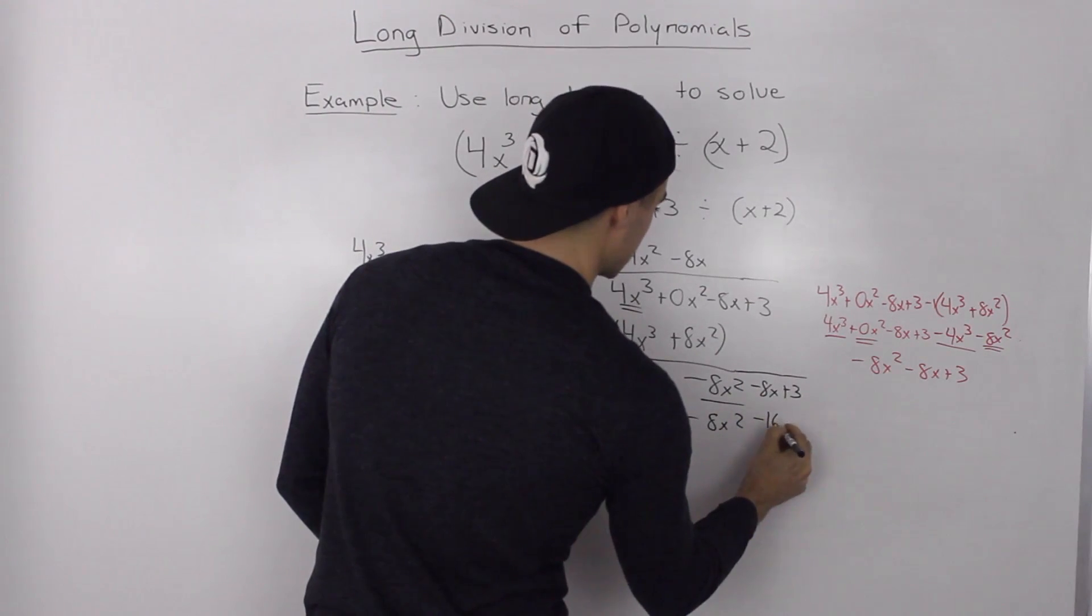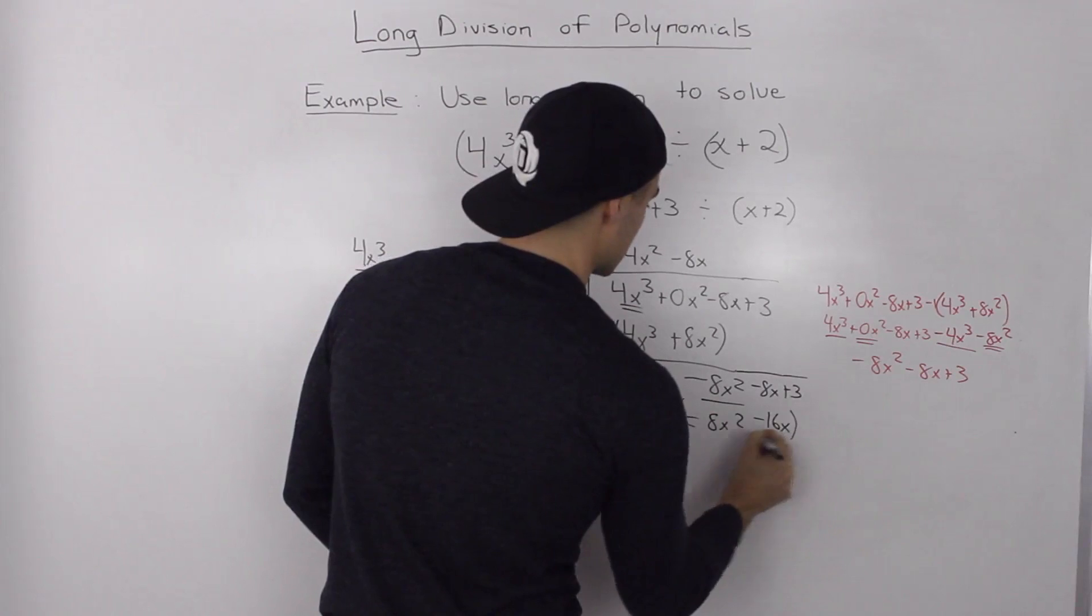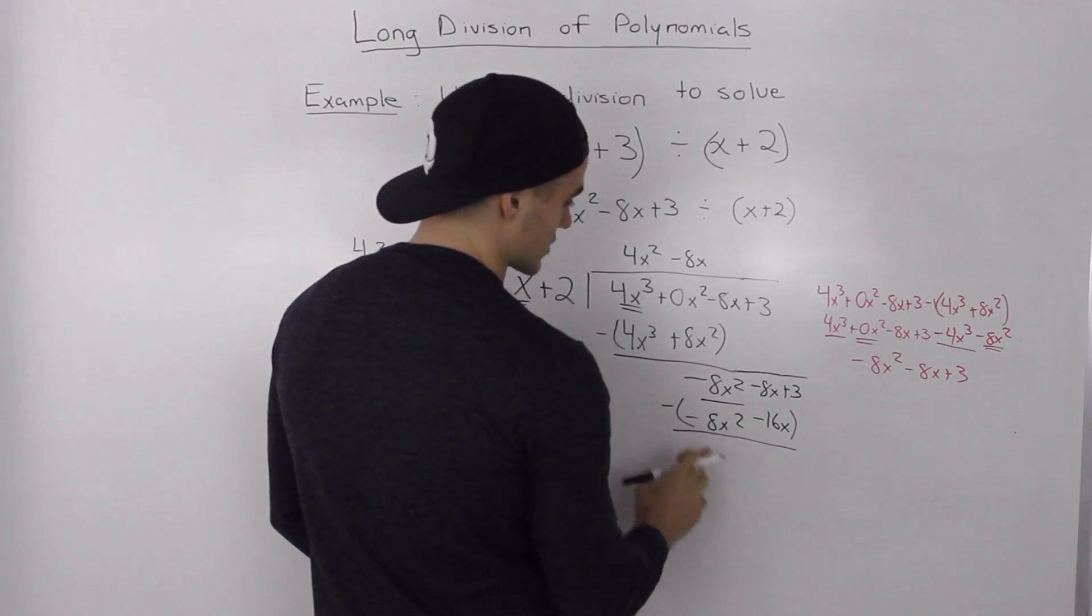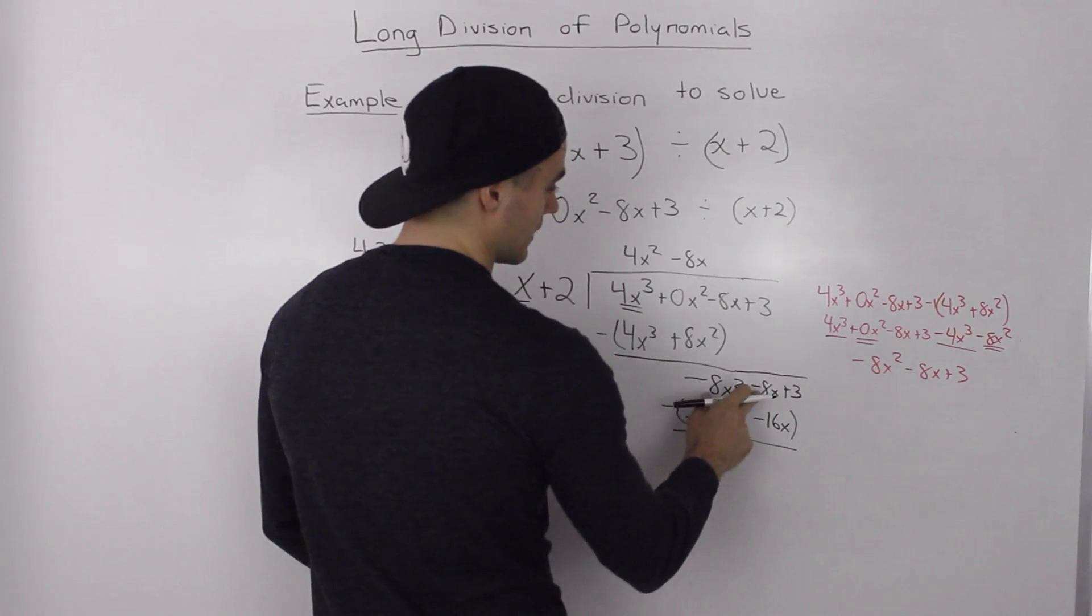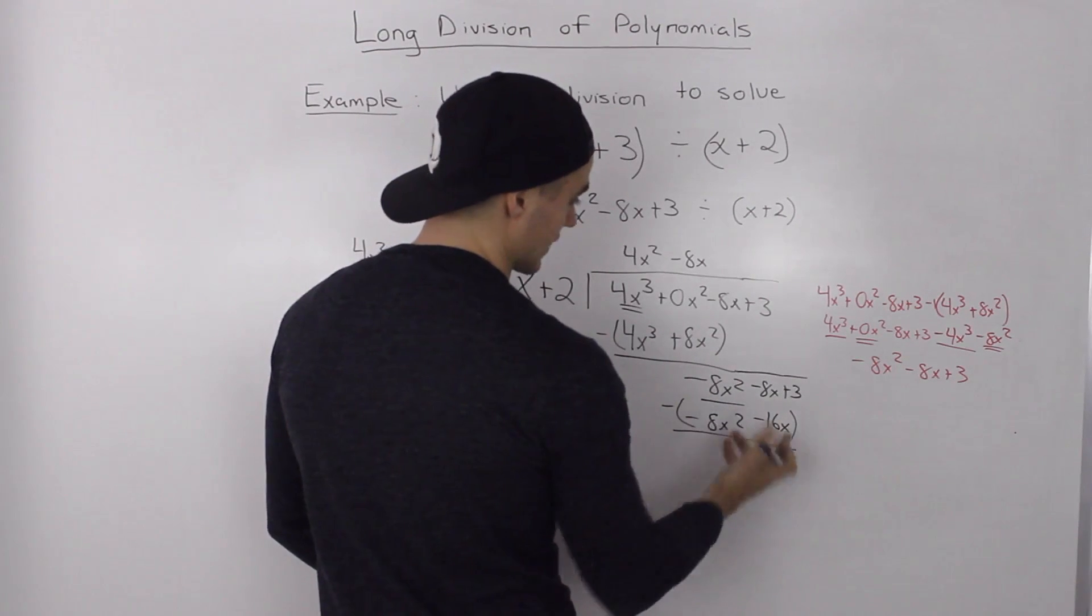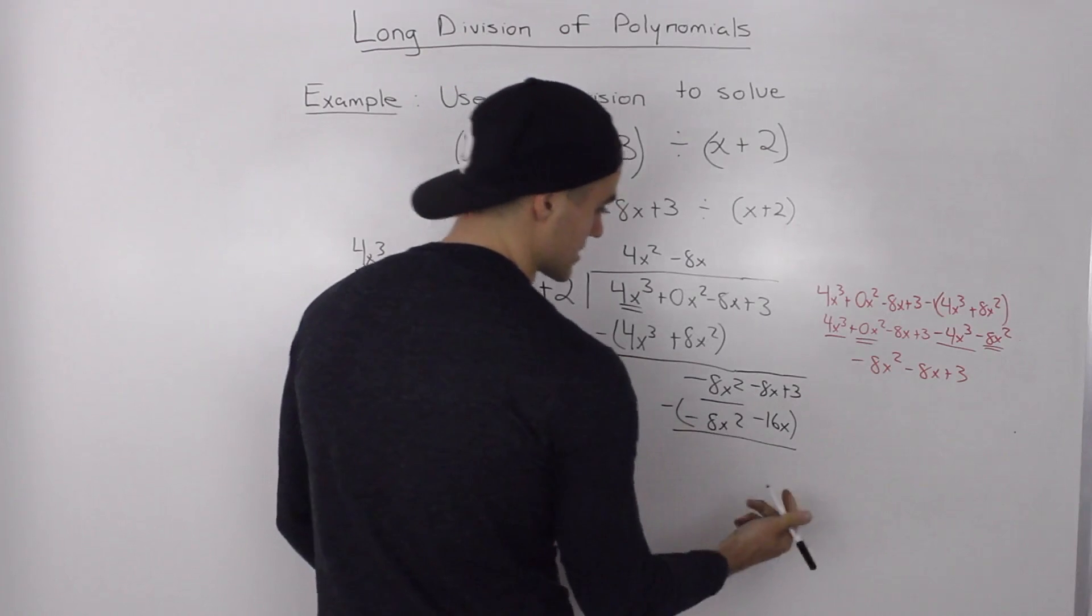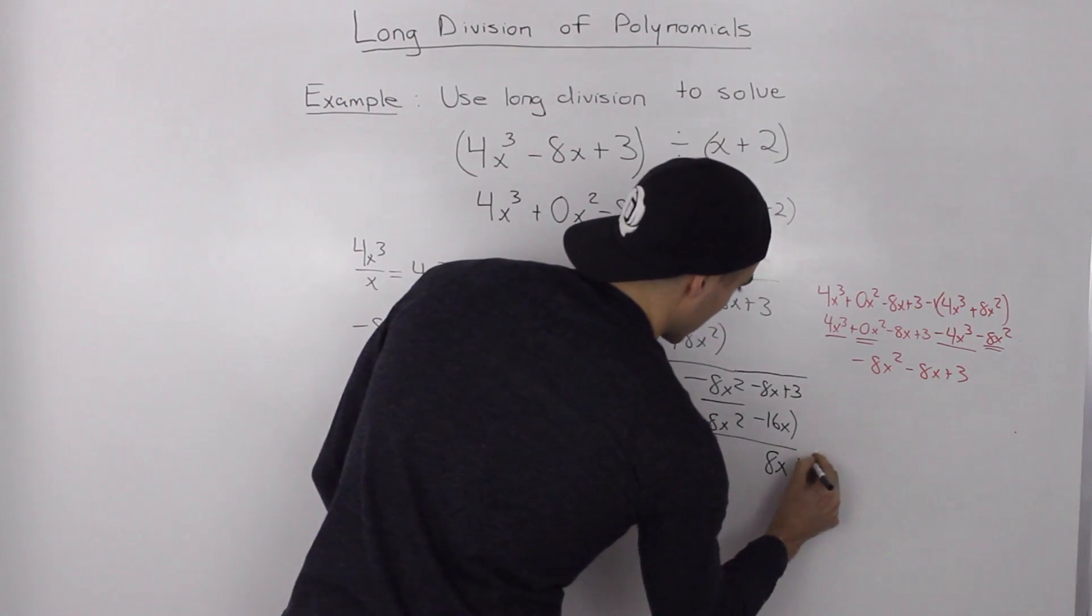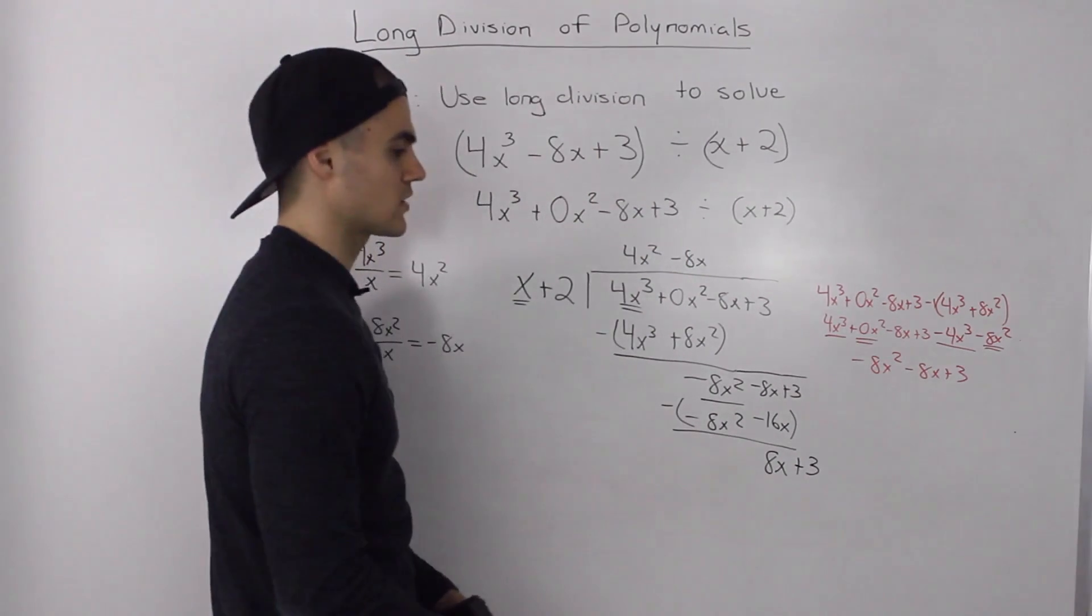So, when we subtract these, the negative 8x squared minus negative 8x squared, those cancel out to 0. Negative 8x minus negative 16x is the same as negative 8x plus 16x, which gives us positive 8x. And then bring the 3 down, that gives us 8x plus 3.